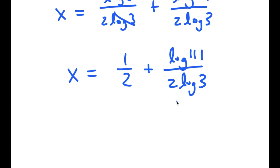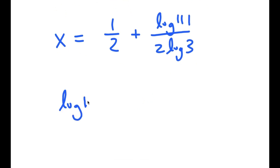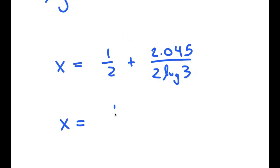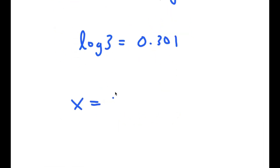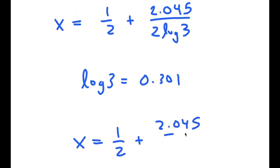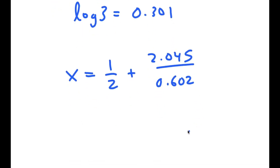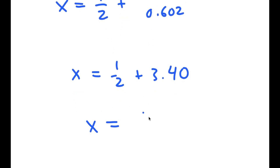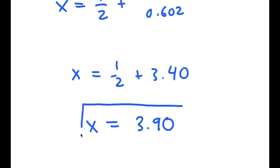Now log of 111 is equal to approximately 2.045. So I get x equals one half plus 2.045 over 2 times log 3. And log 3 is approximately 0.301, so 2 times 0.301 is 0.602. So log of 111 divided by 0.602 gives approximately 3.40. Adding one half to this, I get approximately 3.90 as my solution.